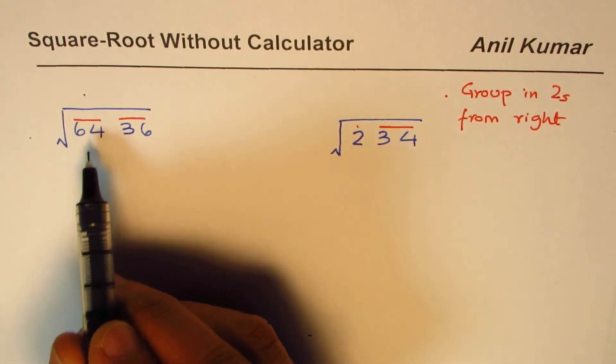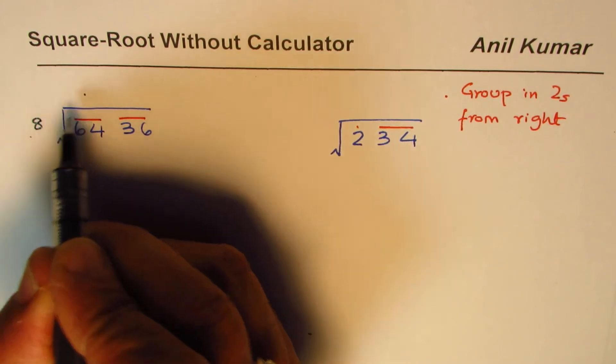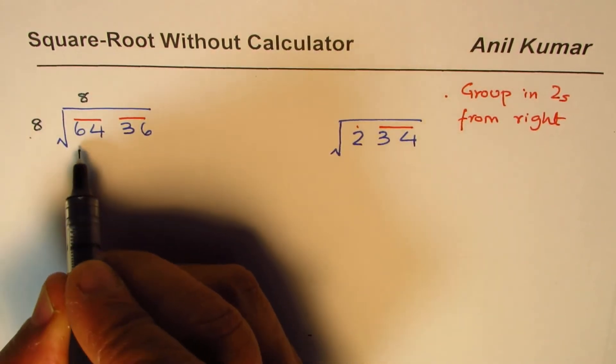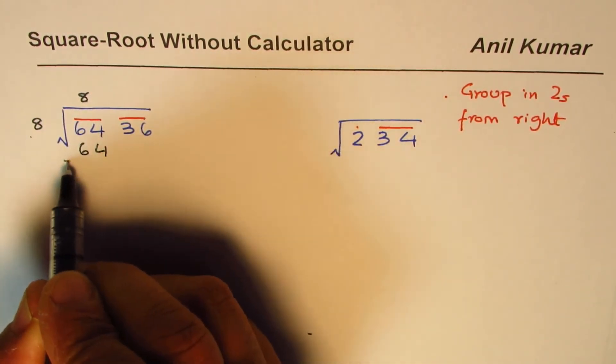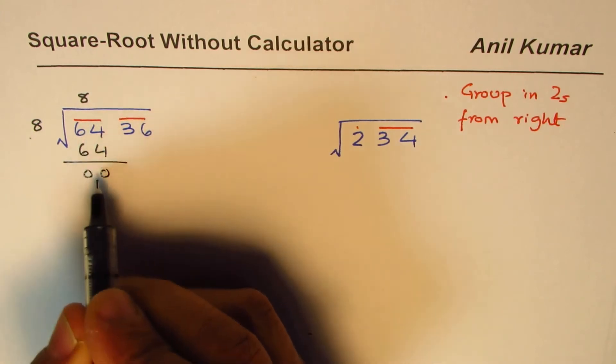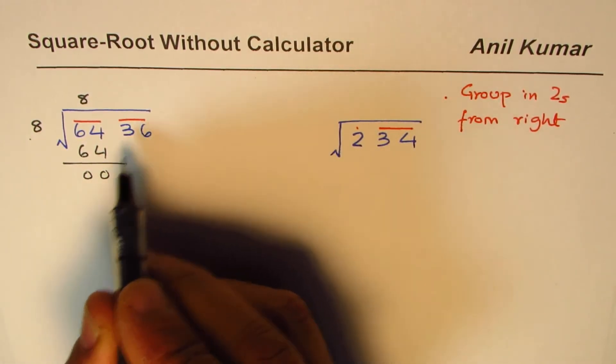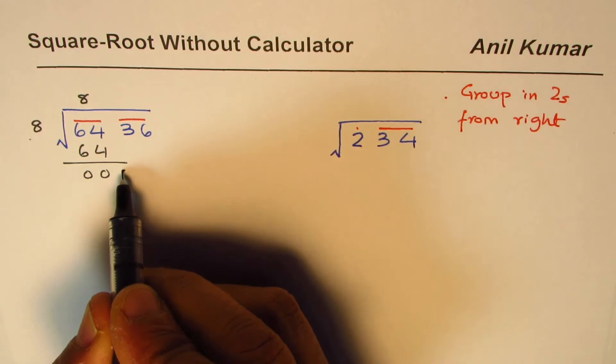So we can write 8 times 8 = 64, take away - that is the normal division process. Bring down the second set, not just a number, so it is 36 in our case.